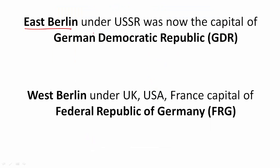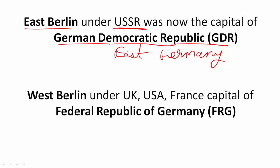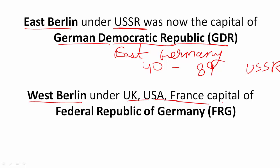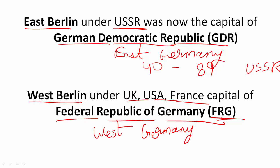The east area of the city of Berlin was under USSR control and it became the capital of the German Democratic Republic, commonly known as East Germany. There was only democracy in the name — there was hardly any democracy for the 40 years it existed up till 1989. There was only one party that ruled, and it was a puppet state of USSR. On the other hand, the west part of Berlin became the capital of the Federal Republic of Germany, or FRG, commonly known as West Germany. Remember these names — FRG and GDR — they might be asked in exams.